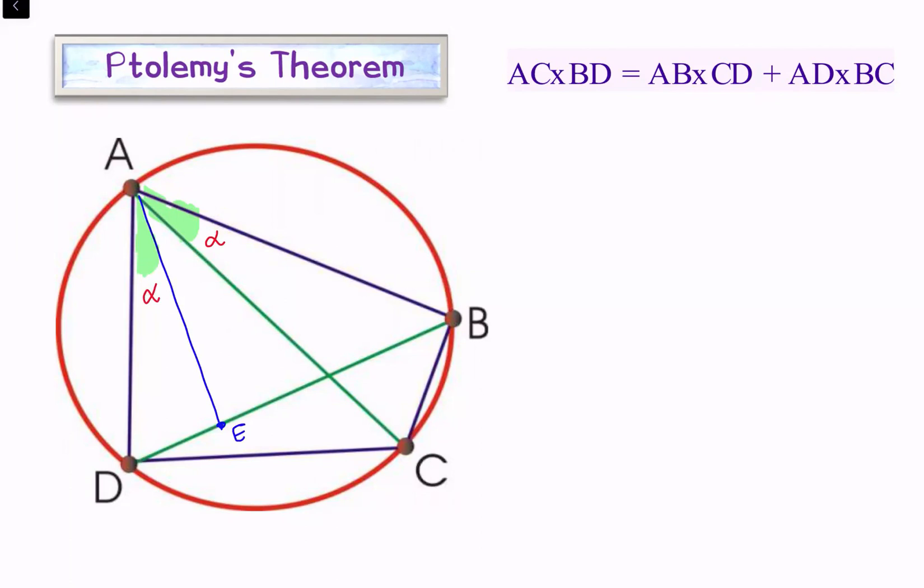To begin with, we'll be taking two triangles here. One is this yellow triangle ADE and the second is the blue triangle. We know that in a circle, a chord subtends equal angles on the same side of the segment. So if we look at the chord AB, this AB is subtending two angles here.